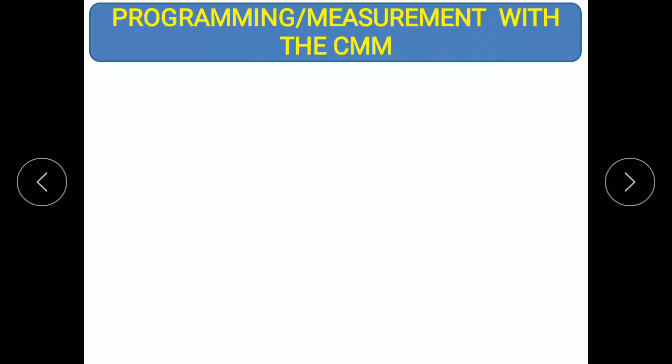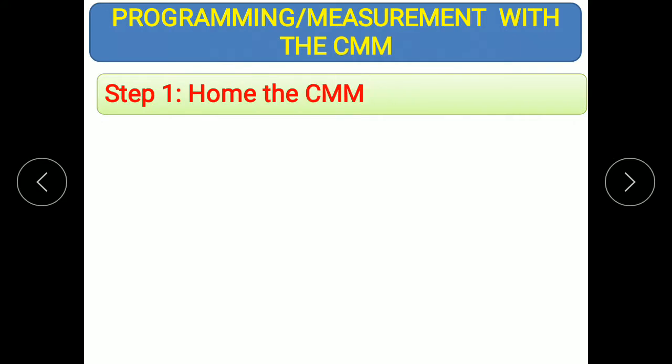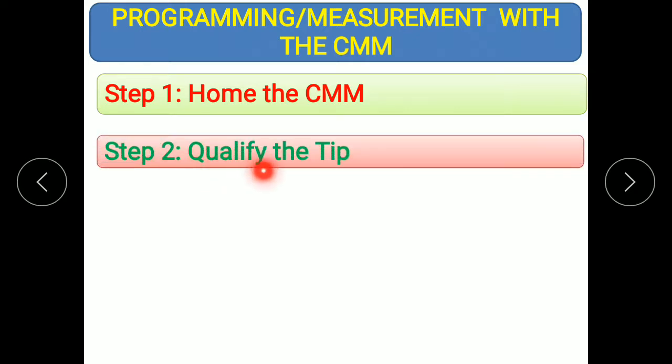The steps involved in measurement using a CMM are as follows. Step one is to home the CMM — set the coordinate origin. Step two is to qualify the tip — check the stylus properly to ensure it is correctly set and qualified for inspection.